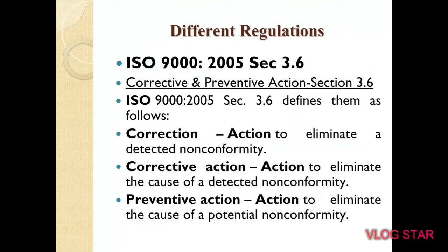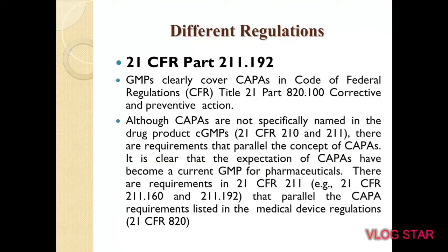Let's define corrective action and preventive action along with different regulatory aspects. ISO 9000:2005 in section 3.6 provides three different definitions. First, correction: the action to eliminate a detected non-conformity. Second, corrective action: the action to eliminate the cause of a detected non-conformity. Third, preventive action: the action to eliminate the cause of potential non-conformities. Now let's discuss what is mentioned in the Code of Federal Regulation related to CAPA.